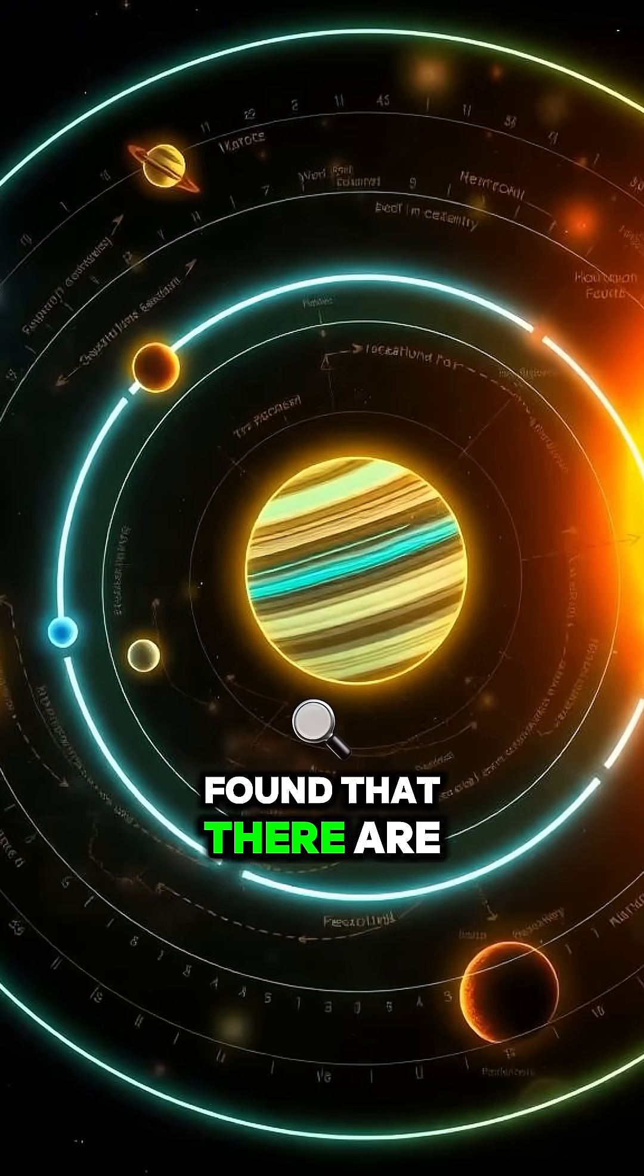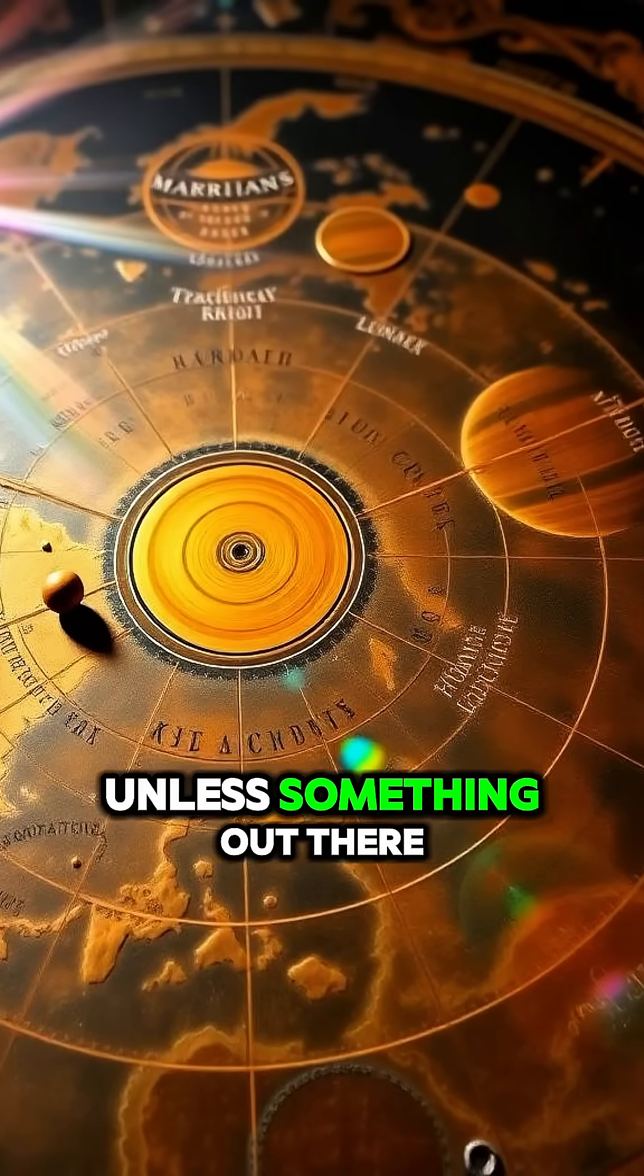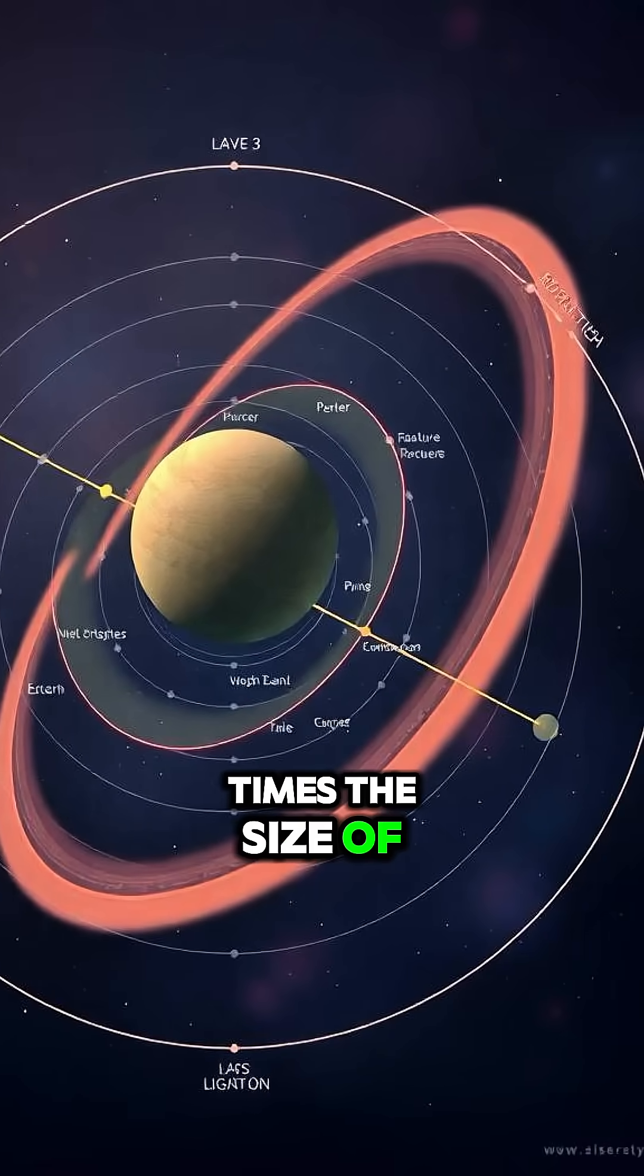A theory called Planet Nine found that there are some objects in our solar system whose orbits don't really make sense, unless something out there is pulling on them. It was originally thought to be a planet around 5 to 10 times the size of the Earth.